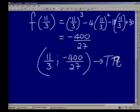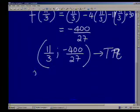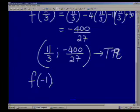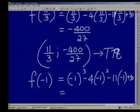My second one is when x is negative 1. So I'm going to find f of negative 1. And that will be negative 1, and I'm cubing it. Minus 4 times negative 1 squared. Minus 11 times negative 1 plus 30.